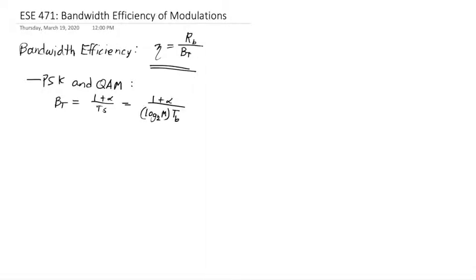That's because if it takes Ts to send one symbol, and that symbol conveys log base 2 of m bits, then you're effectively sending a bit every Tb, which is Tb equals Ts divided by log base 2 of m. So this is the bandwidth in terms of the bitrate, because 1 over Tb is Rb.